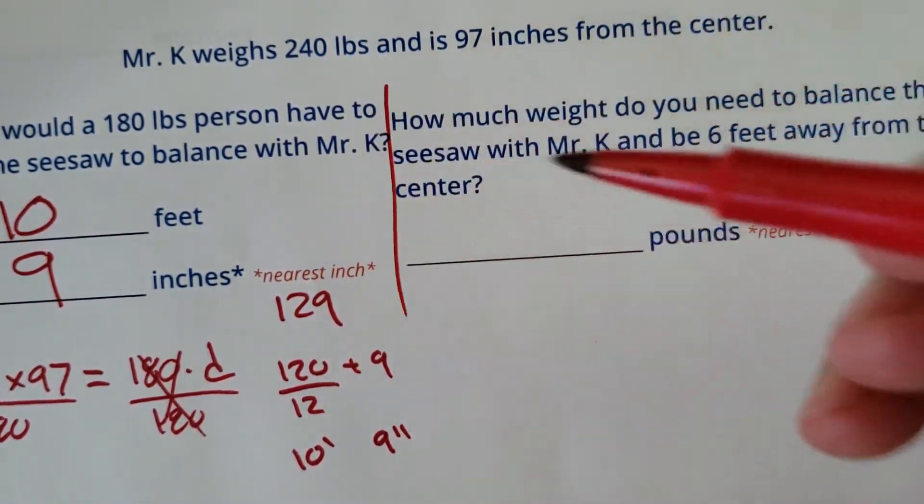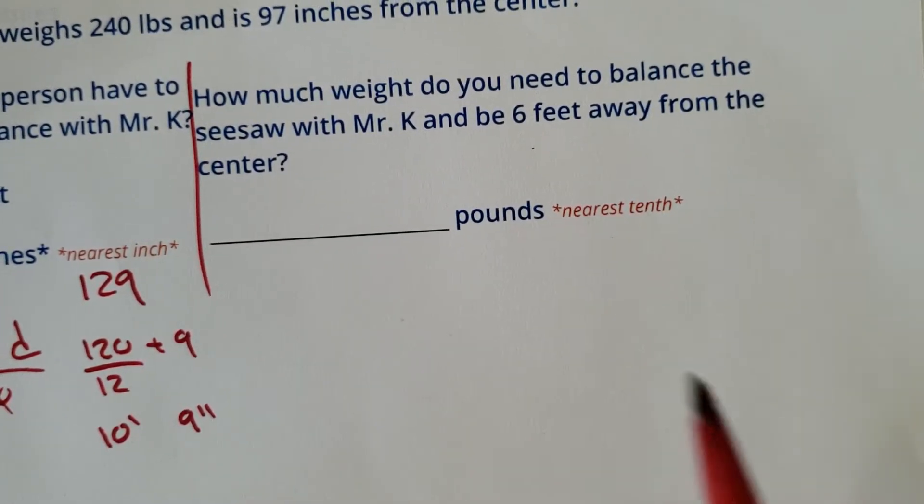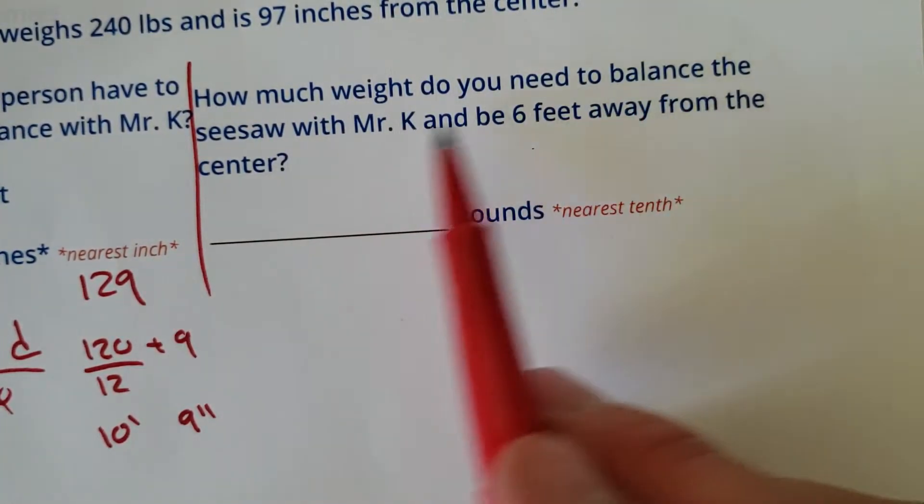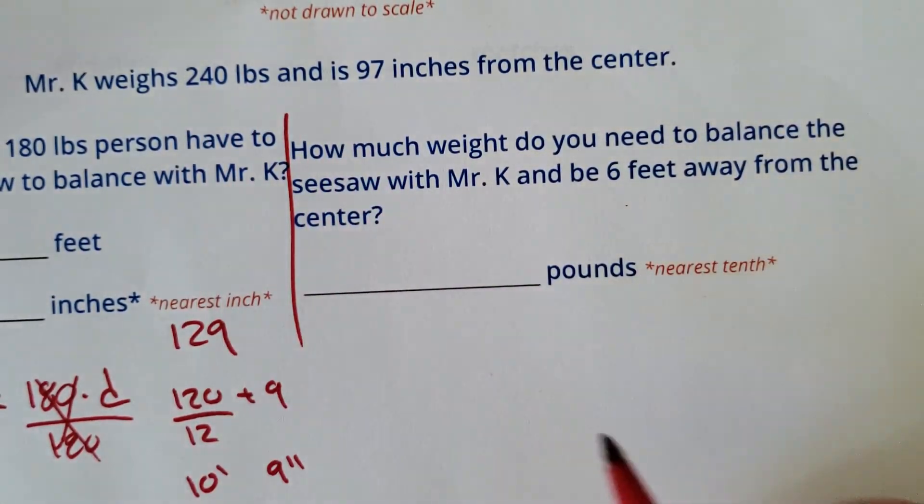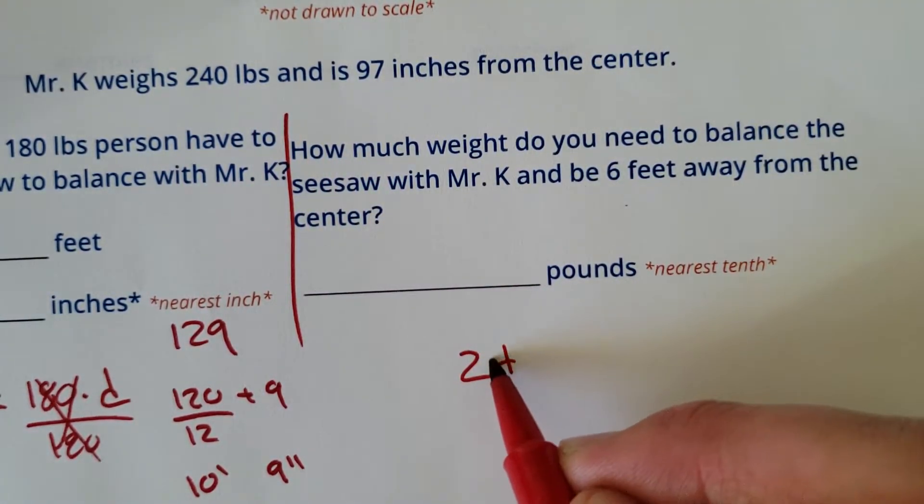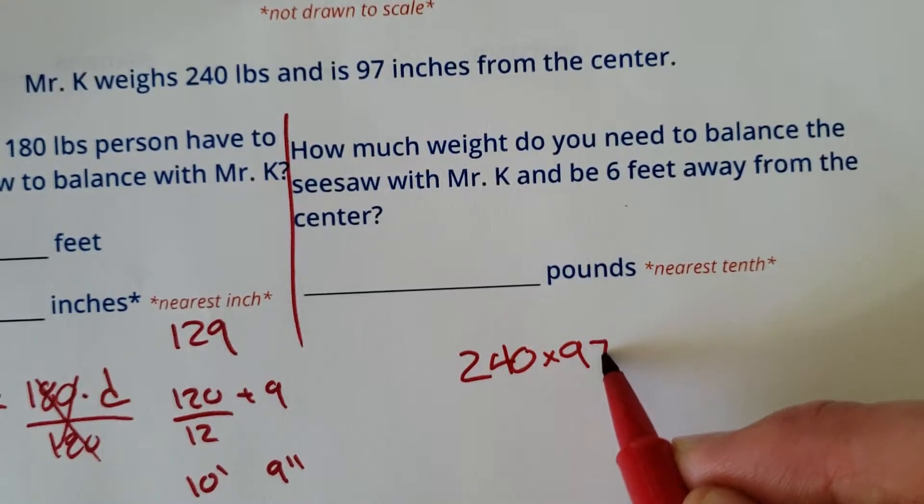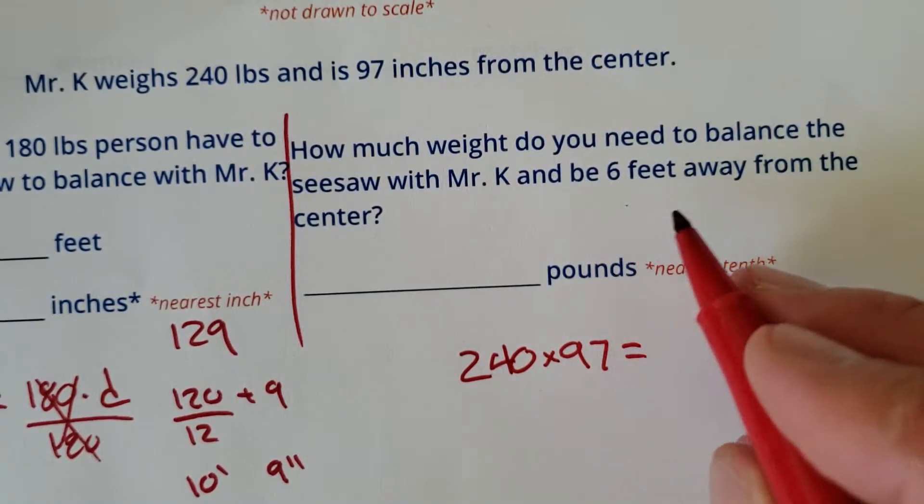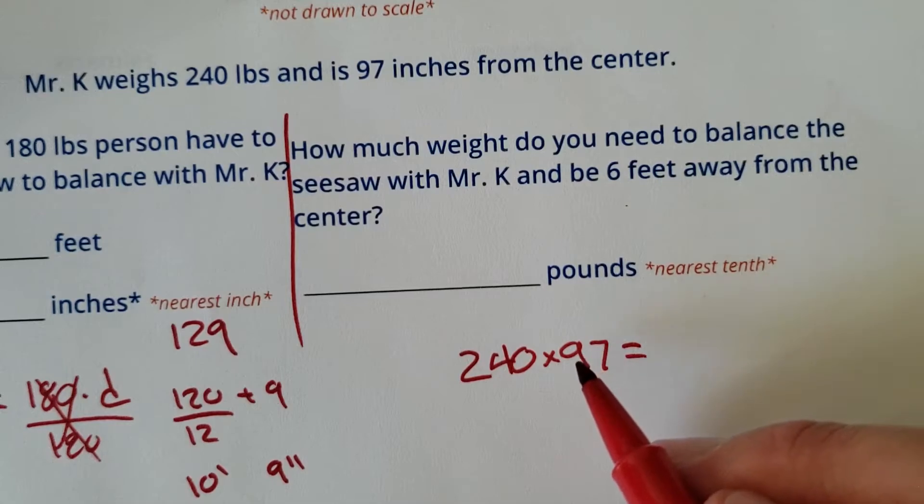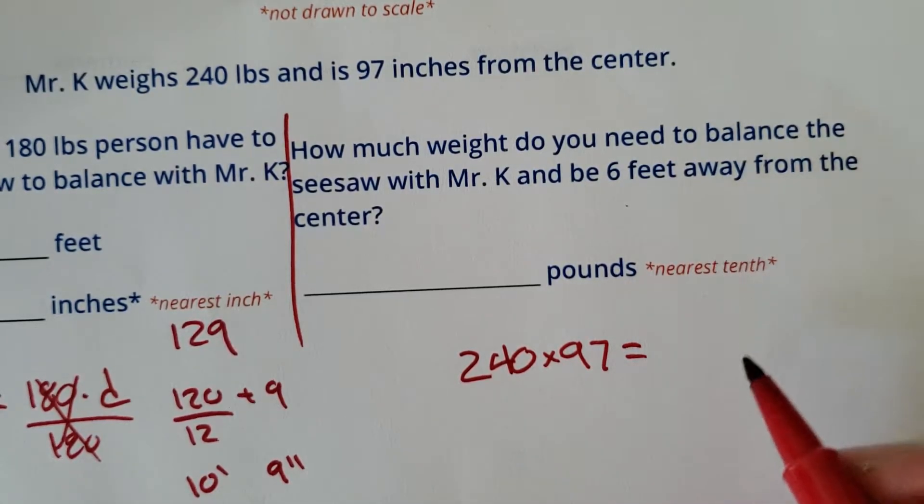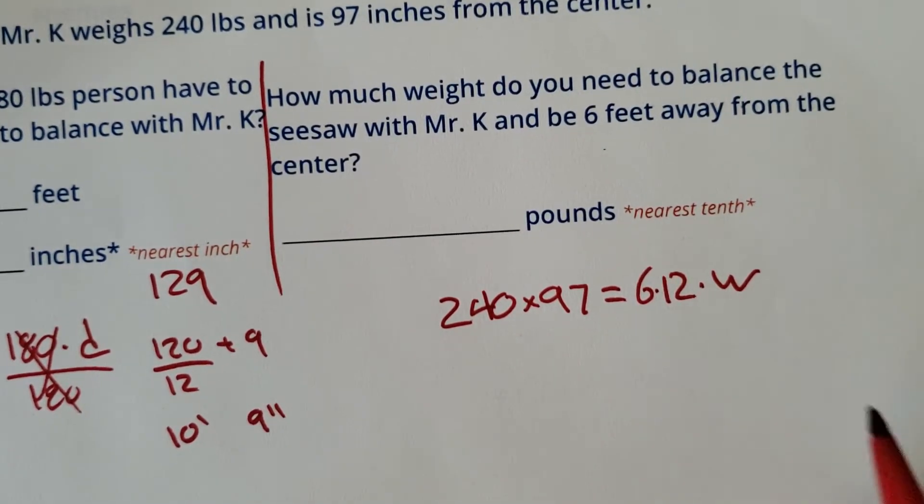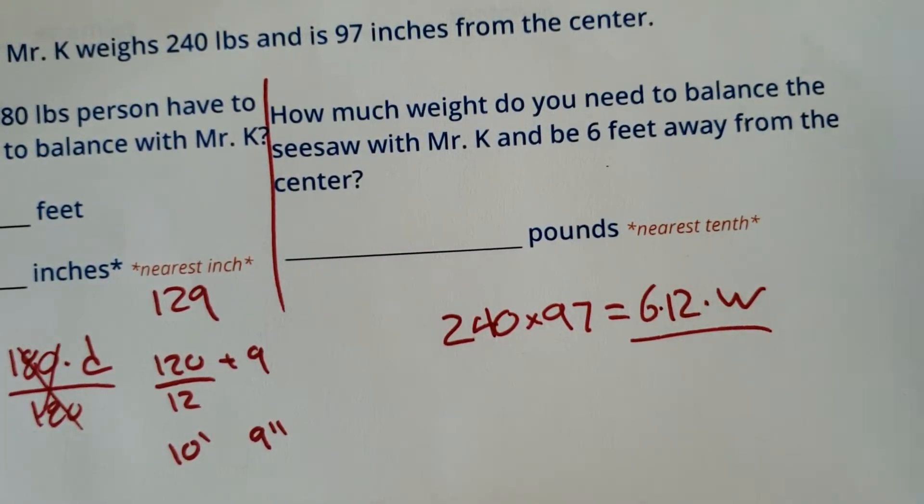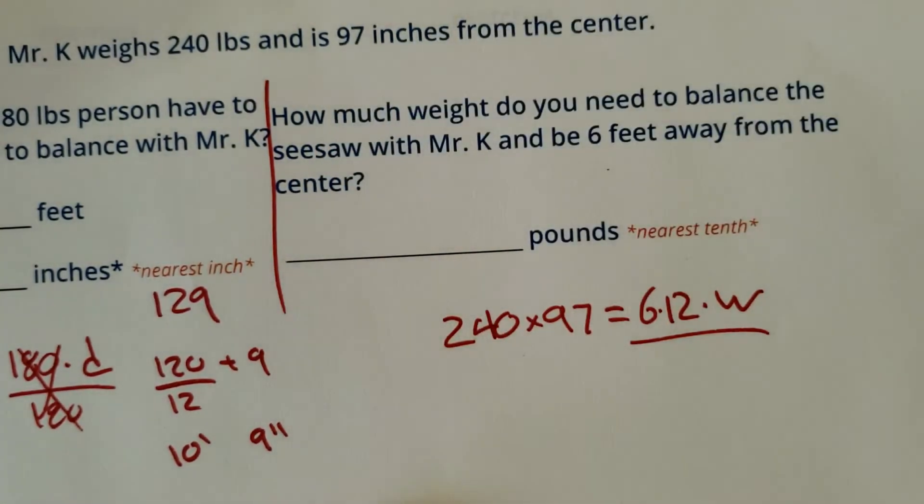Separate question. Sorry about the spacing, I apologize. How much weight do you need to balance the seesaw with Mr. K and be 6 feet away from the center? So same numbers for me. 240 times 97 equals, we have a distance of 6 feet. Now you probably want to change that to inches. So I'm going to go 6 feet times 12 times the unknown weight. So let's divide by 6 times 12. What is 6 times 12? I think it's a number. Hey, the number is 72.